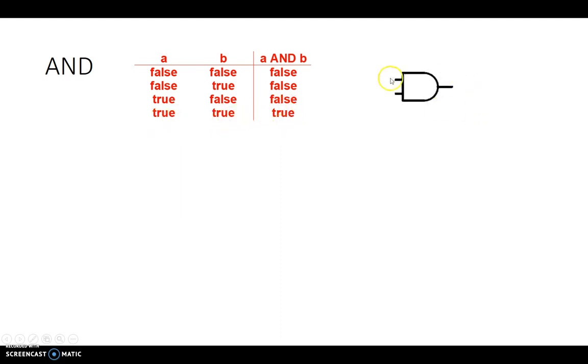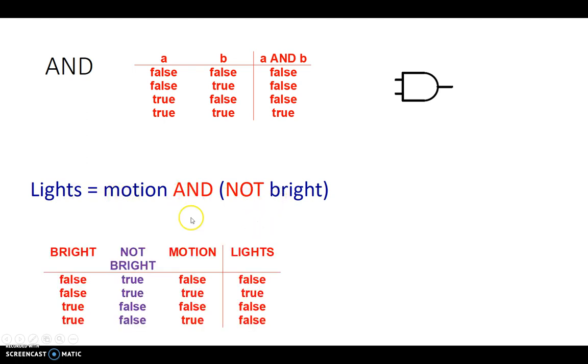We draw this as this. Two inputs and an output. It can have multiple outputs, more than two outputs. I'm sorry, it can have more than two inputs. Now let's take an example of our logic. LIGHTS equals MOTION and NOT BRIGHT. In this case, let's enumerate every possible case.